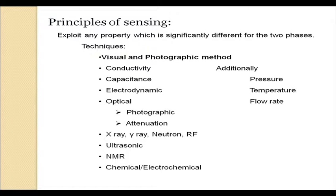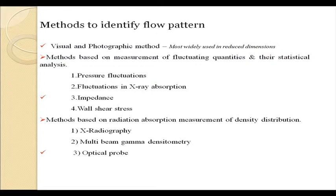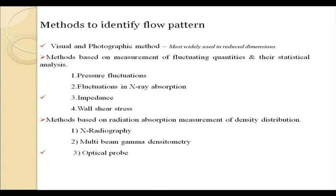If we record a signal that captures variation of any particular property which is widely different for the two phases, then from the continuous signal we get an idea about the distribution of the two phases, and from the average value we get an idea regarding the in situ composition. The most widely used technique - visual and photographic methods - actually operates on the difference in transparency or optical property of the two phases.